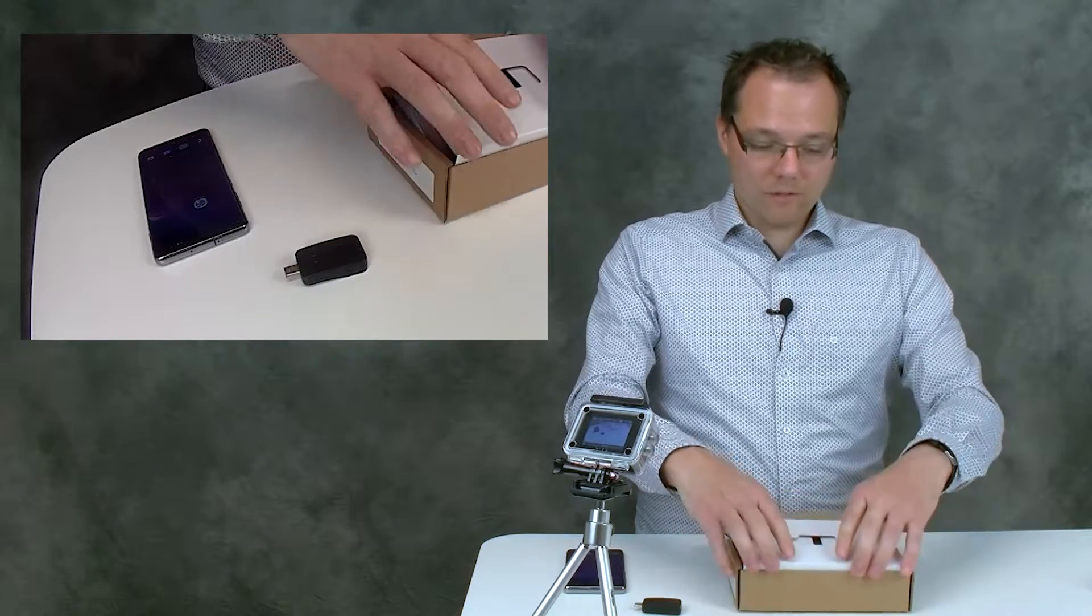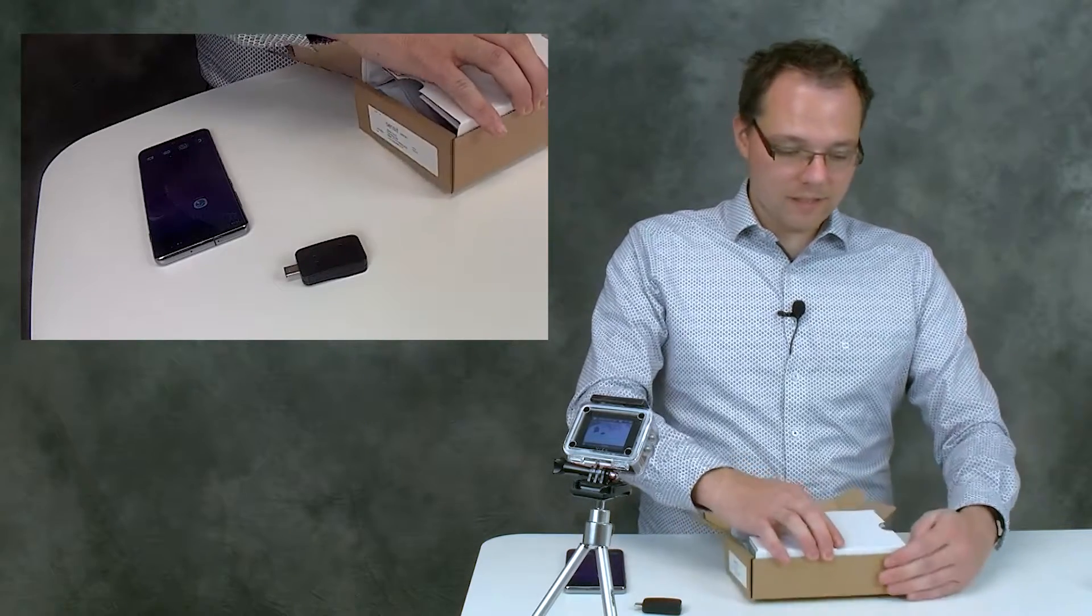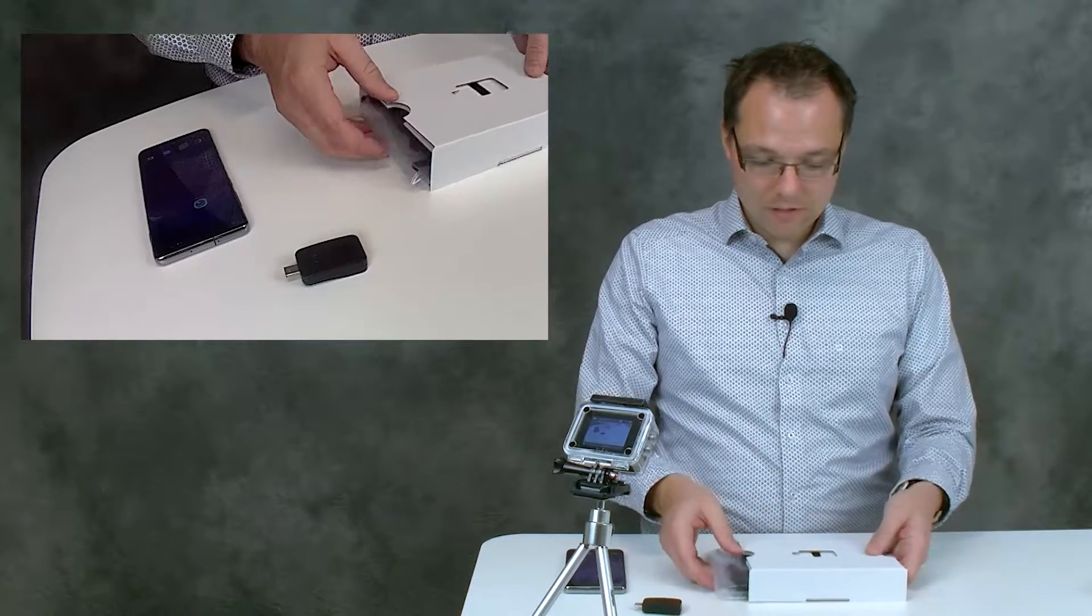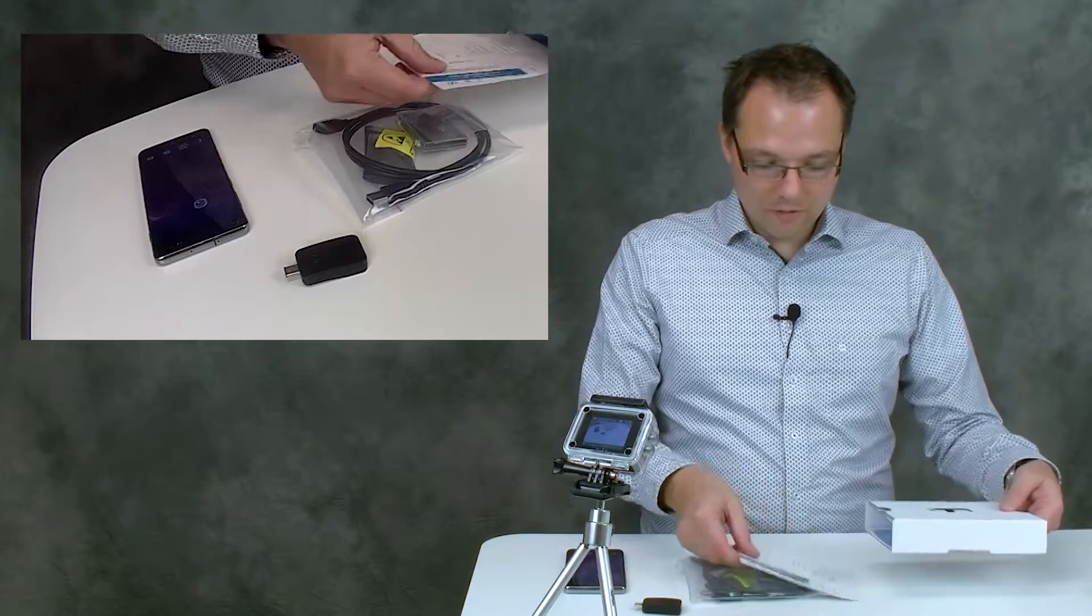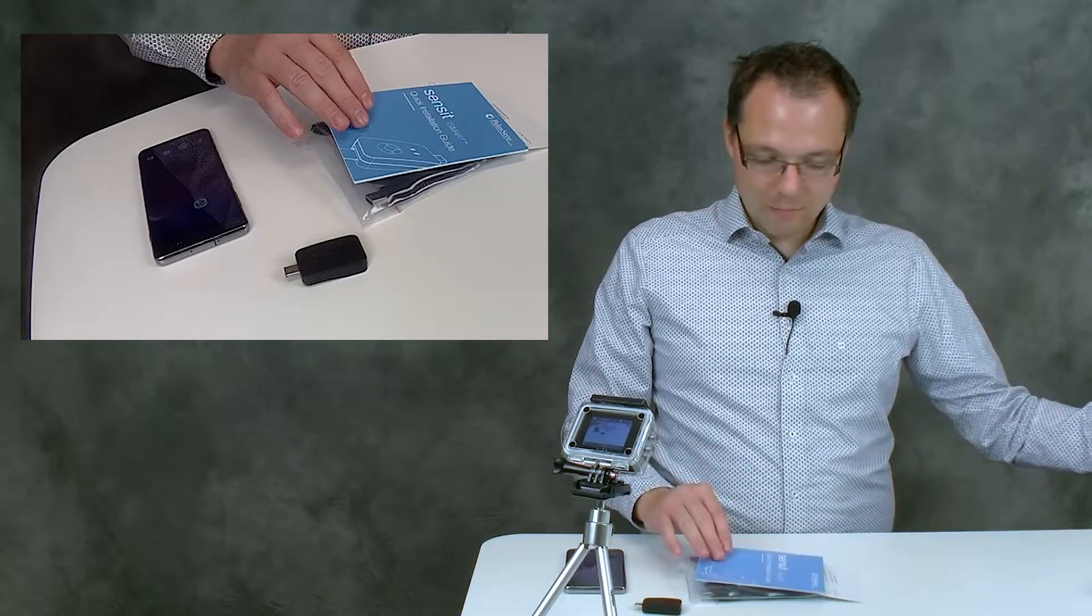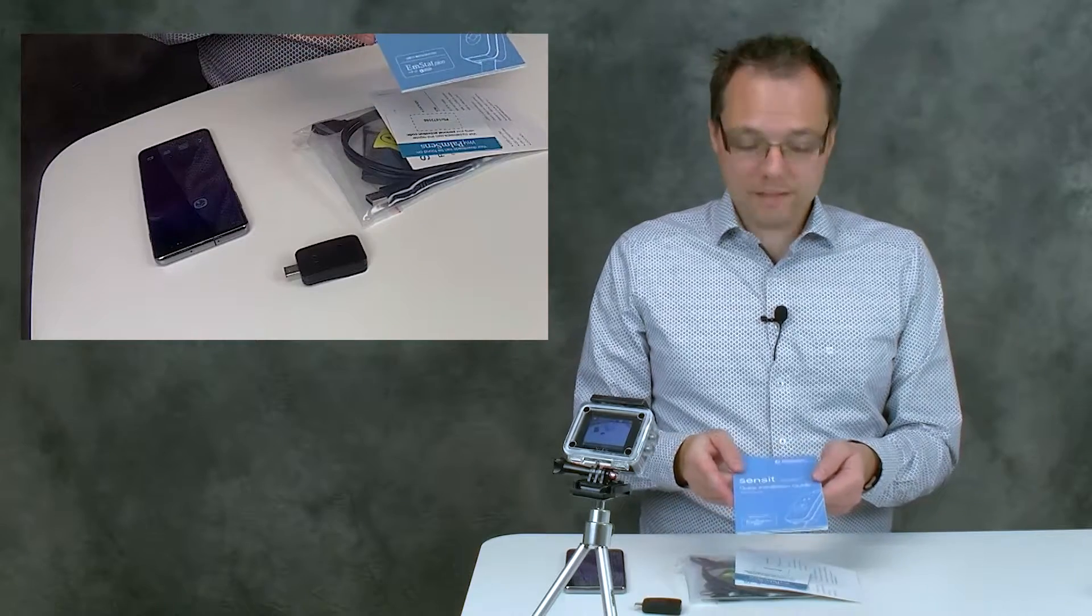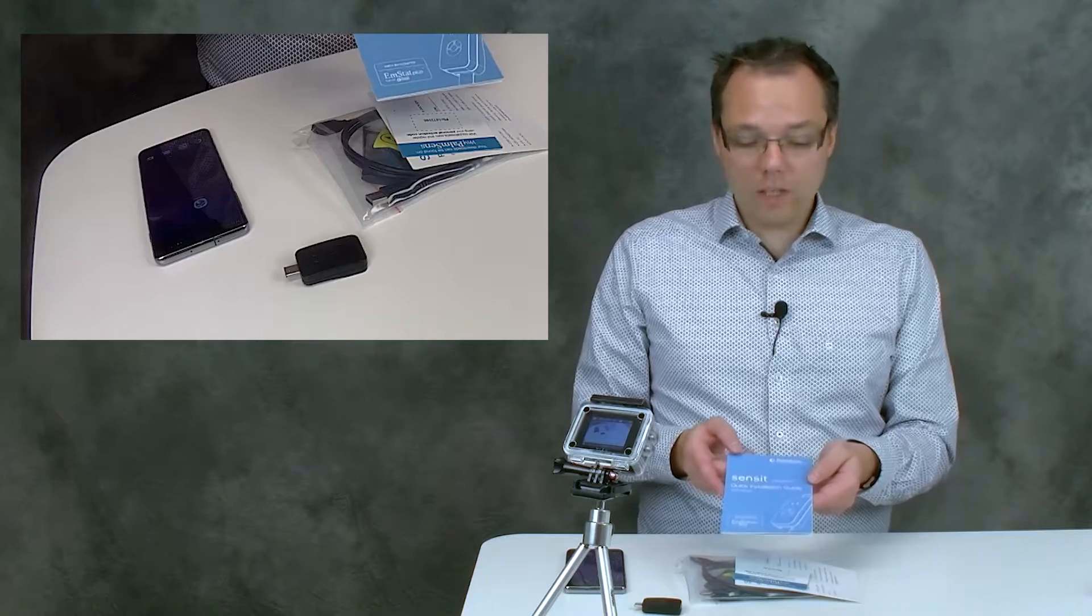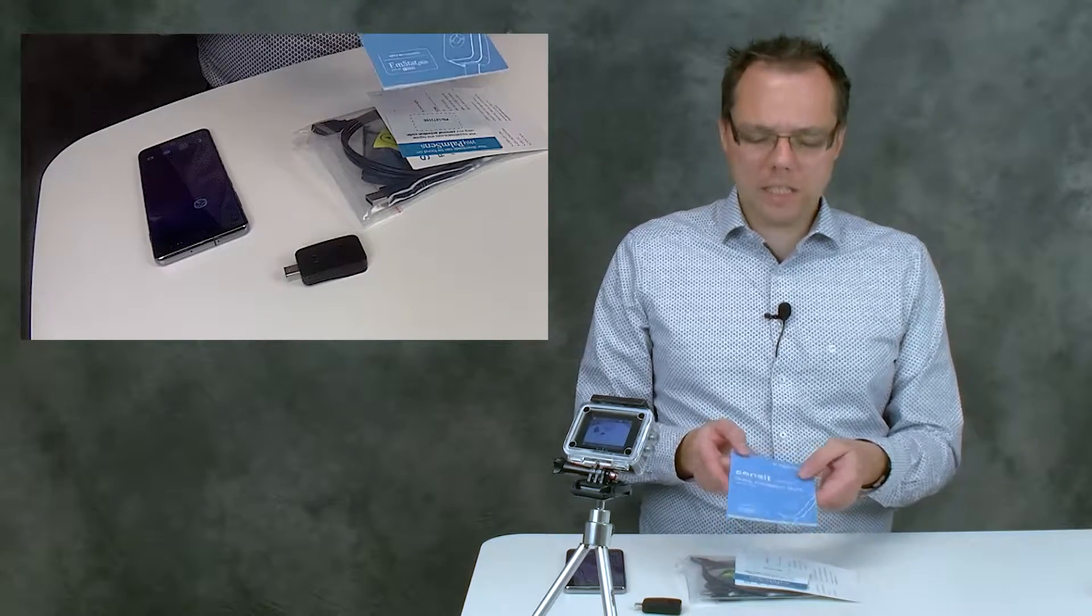All the rest of the accessories that come with a Sensit Smart are inside this part of the box. You can just slide everything out. You have, for example, the quick installation guide. You can use that if you're not a fan of videos and prefer reading this.